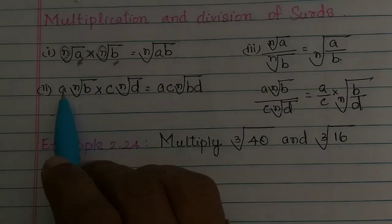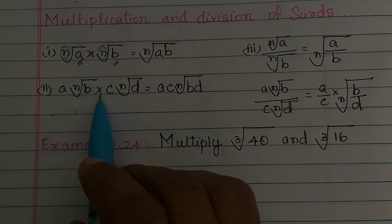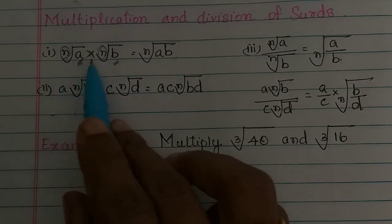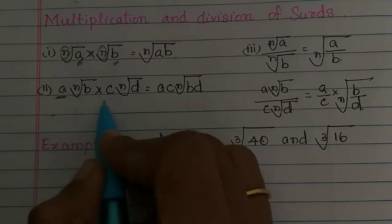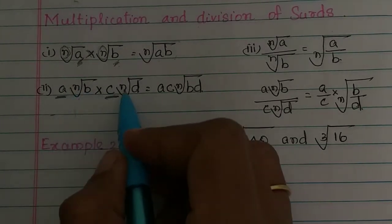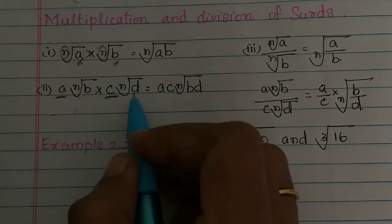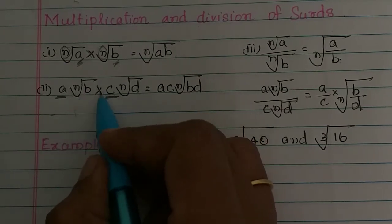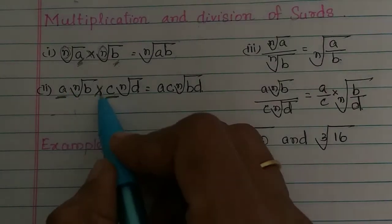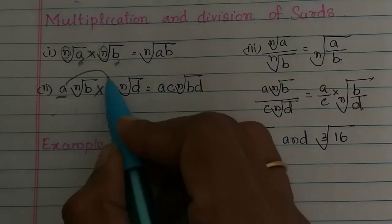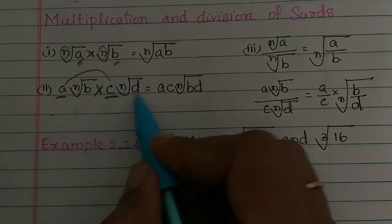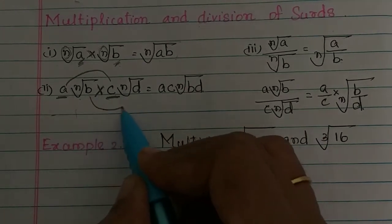If you have a·n√ times c·n√, there are coefficients here. When you multiply, you multiply the coefficients together, then take n√ common with the product of the radicands — it is very simple.